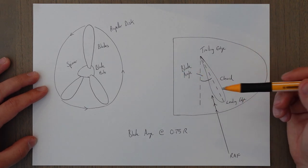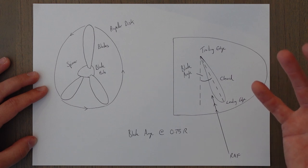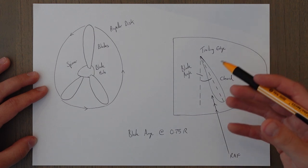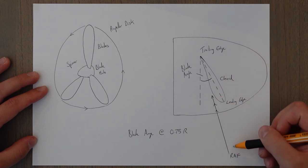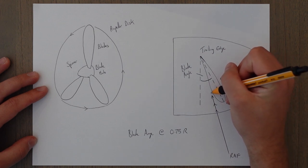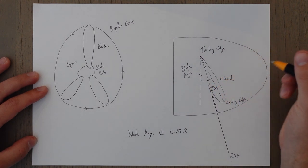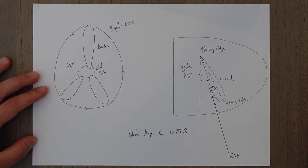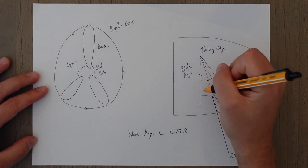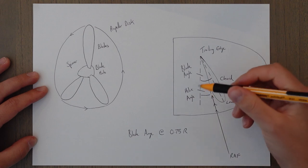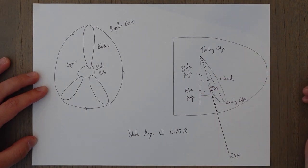As well as the blade angle, we also have an angle of attack, which is the same as with regular wings. The angle of attack is the angle between the relative airflow and the chord line — that's the angle alpha. You also have something known as the helix angle, which is the other angle. So the blade angle is made up of the helix angle plus the angle of attack.